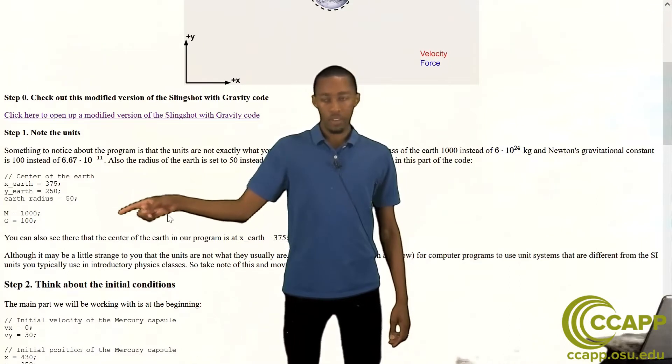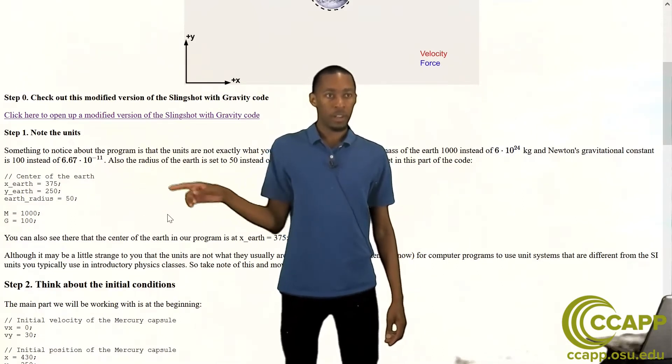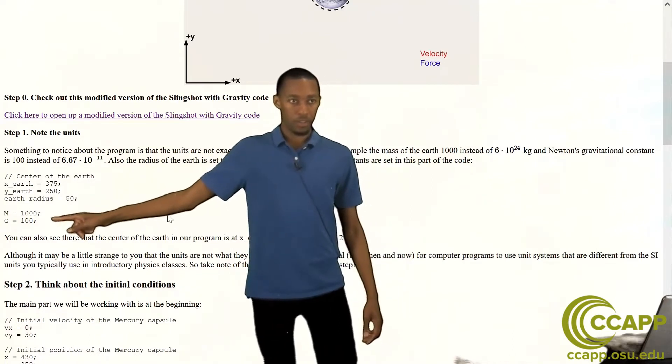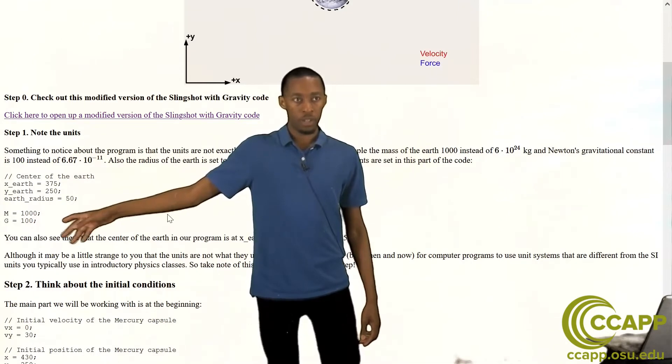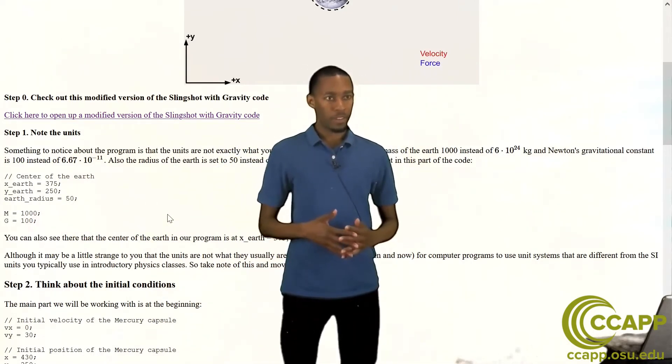So the earth is going to be at the center of our screen and we have given an x value of 375 and a y value of 250. And then the radius of the earth, we're just making earth as a sphere in this case or a circle for the purposes of the display, is simply 50. And we also have a mass for the earth which we say is 1000 and then we have Newton's constant which we say is 100.